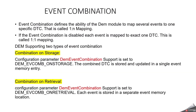Event Combination: Event combination is a DEM model to map several events to one specific DTC — called 1:n mapping. If event combination is disabled, each event is mapped to exactly one DTC (one-to-one mapping). DEM supports two types of event combination: combination on storage and combination on retrieval. The configuration parameter DEM_EVCOMP_ON_STORAGE means the combined DTC is stored and updated in a single event memory entry. Combination on retrieval means each event is stored in a separate event memory location.